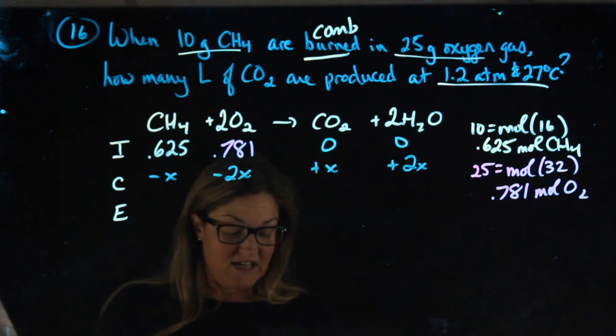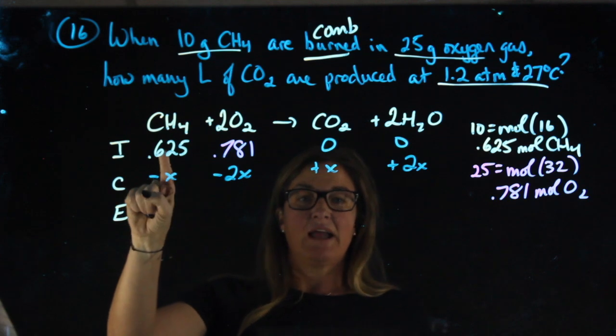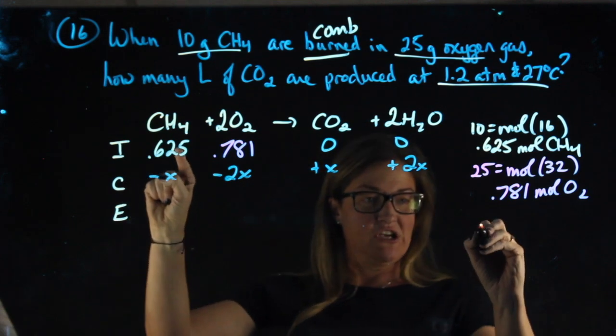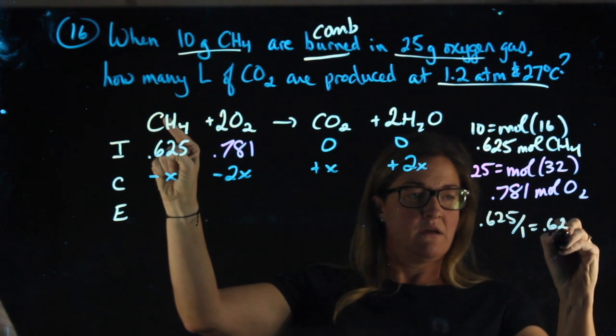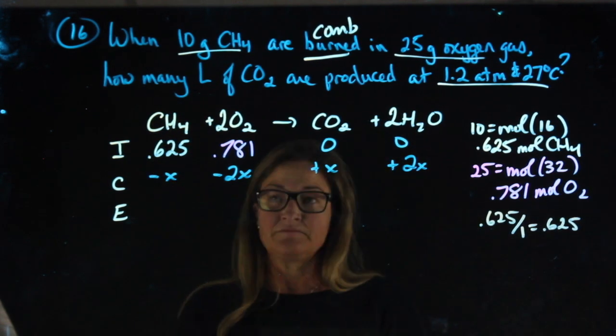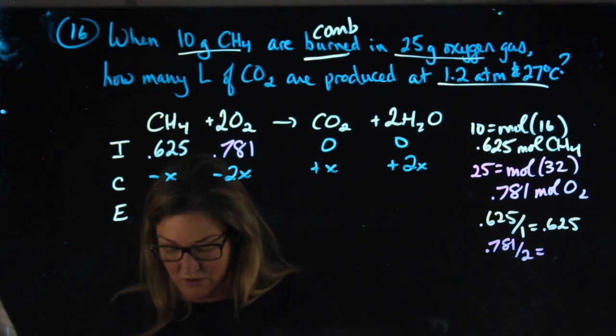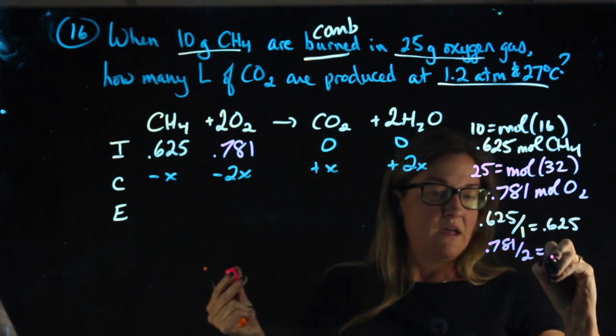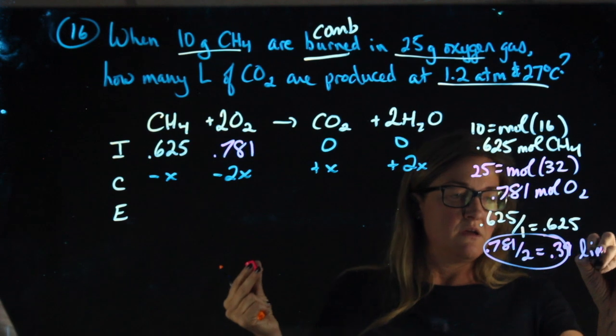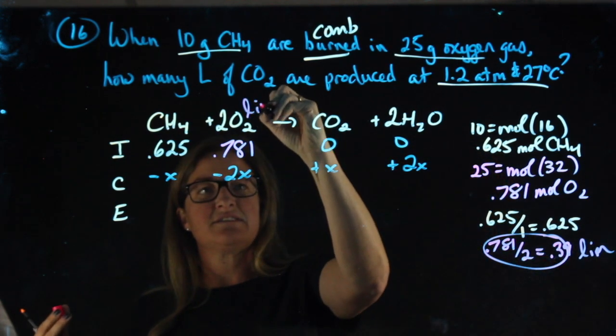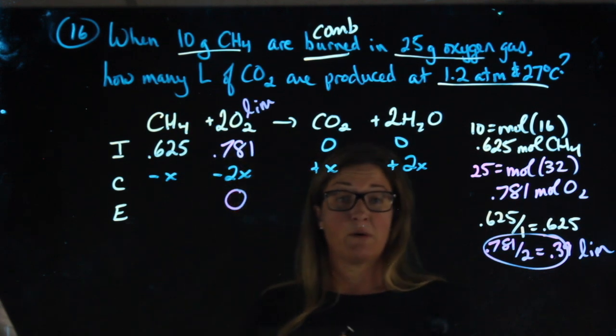Now I need to decide which reactant is limiting. So off to the side here, I'm going to divide each moles by its coefficient. 0.625 divided by 1 is 0.625. 0.781 divided by 2 is 0.39. This number is smaller, meaning the oxygen is limiting. Since I know the oxygen to be limiting, what that means is this becomes zero at the end.